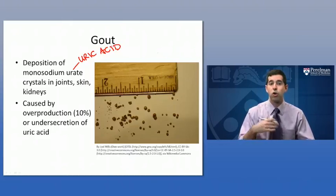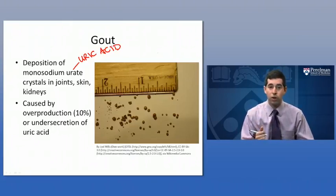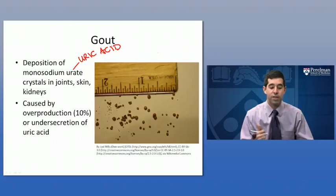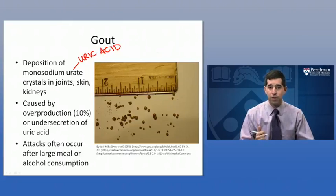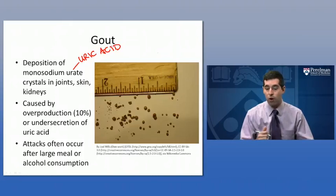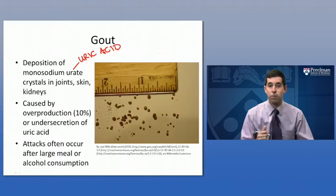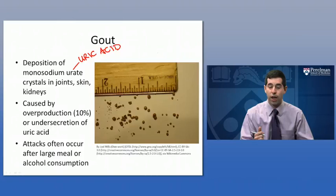Someone may have additional turnover of cells, which means more DNA is being released, digested, broken down, and turned into uric acid — that would be overproduction. But that's the minority of cases. Usually the person is producing uric acid at a normal rate, but their body just has difficulty getting rid of it, particularly in the kidneys, so it builds up in the bloodstream and deposits into joints, skin, and kidneys. Gout attacks — very significant pain — are usually associated with a large meal or alcohol consumption. Alcohol inhibits the release of uric acid into the urine by competing with the transporters in the kidney that allow uric acid to move from the bloodstream into urine.